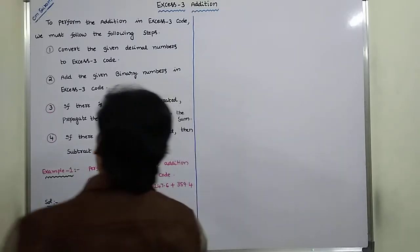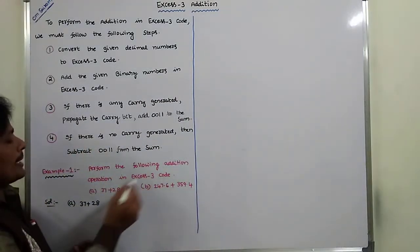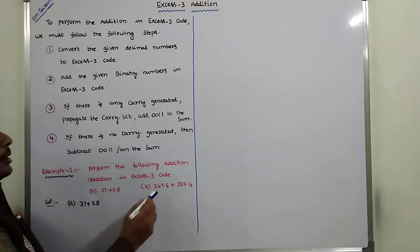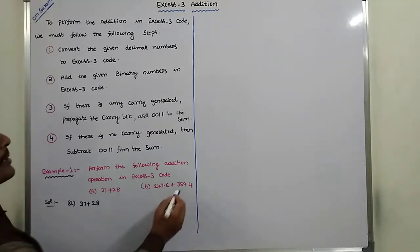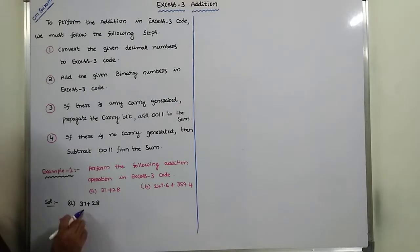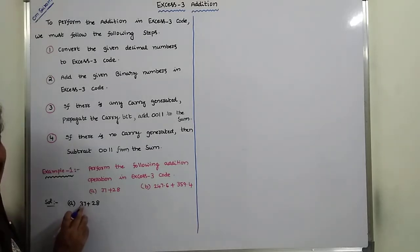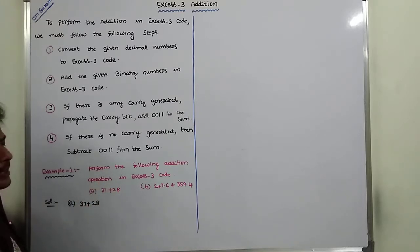Example: perform the following addition operation in XS3 code. First one: 37 plus 28. Second one: 247.6 plus 359.4. For the first one, 37 plus 28 — in this decimal number there are two digits. For each and every digit, we have to add plus 3 to get the equivalent XS3 code numbers.